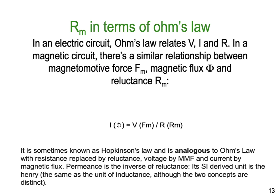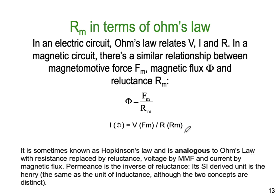So in terms of Ohm's law we can look at that again. We have our original formula with the Ohm's law equivalent inserted: phi equals Fm on Rm is equivalent to I equals V divided by R. This is also sometimes known as Hopkinson's Law, and again it's analogous to Ohm's law, with voltage replaced by magnetomotive force and current replaced by magnetic flux.